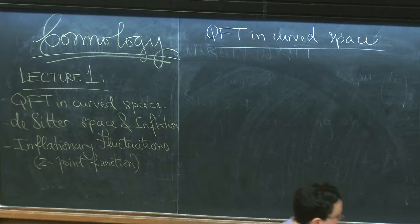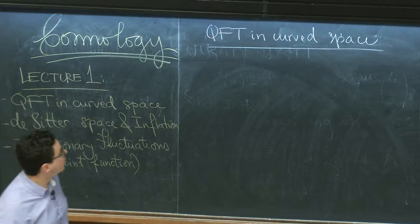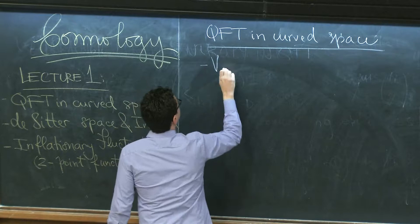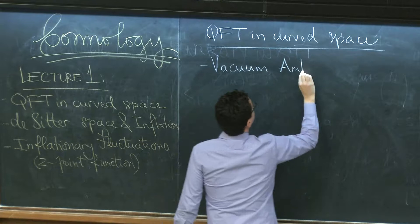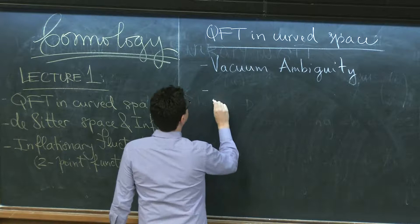Quantum field theory in curved space is a huge subject — there are textbooks written on this subject. I just want to highlight two things about this, which are not the case in standard particle physics in flat backgrounds. The first thing is that the notion of vacuum can be ambiguous — there is a vacuum ambiguity in general; it's not clear how to define the vacuum in a curved space. And the other thing is that there is spontaneous particle production.